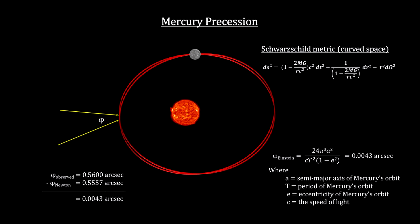With Schwarzschild's metric, Einstein calculated 0.0043 arcseconds due to the curvature of space near the Sun. This was the exact number to cover the difference. He had passed the first test of his new theory.